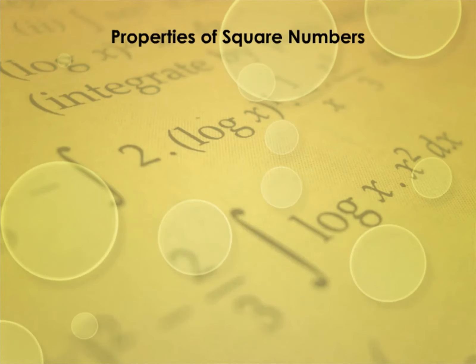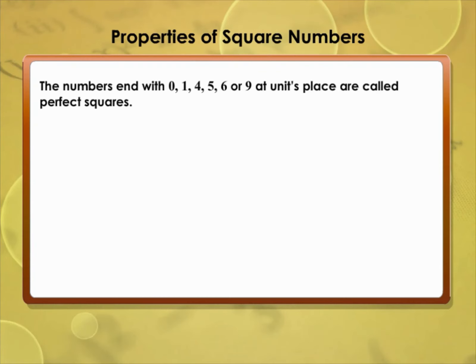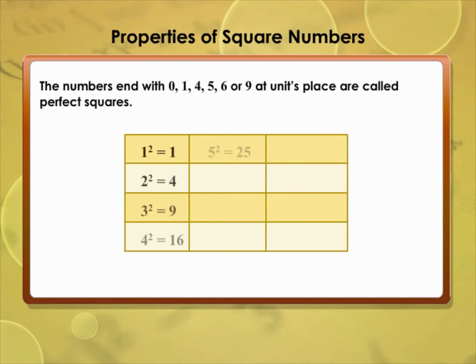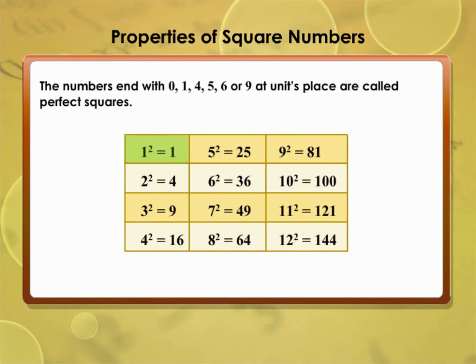Properties of square numbers: numbers ending with 0, 1, 4, 5, 6, or 9 in the unit's place are called perfect squares. Look at the perfect square numbers chart and observe the unit place of these numbers. They all have either 0, 1, 4, 5, 6, or 9 in the unit's place.